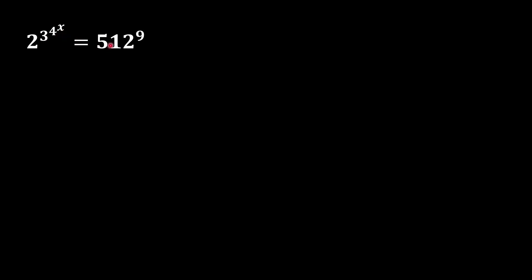We should convert 512 into 2^9, because as we know 2^9 is equal to 512. The overall power of 9 will remain the same, and the other part of the equation will remain the same.